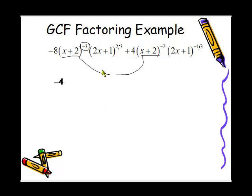For the x plus 2 terms, we identify the one with the smallest exponent, in this case the negative 3. So we can factor out x plus 2 to the negative 3.